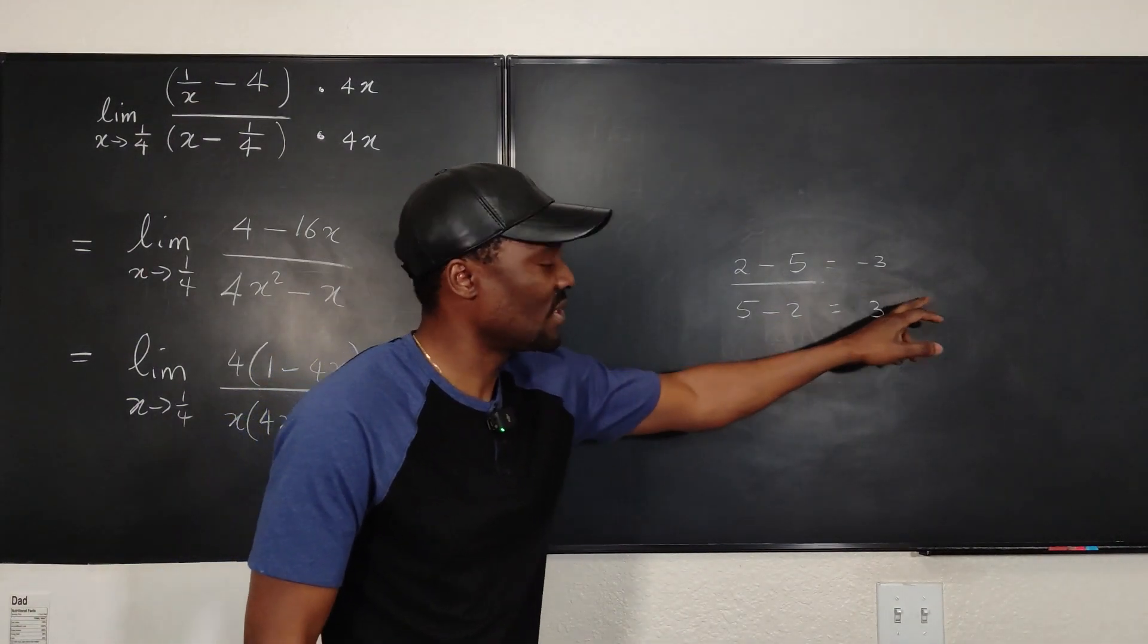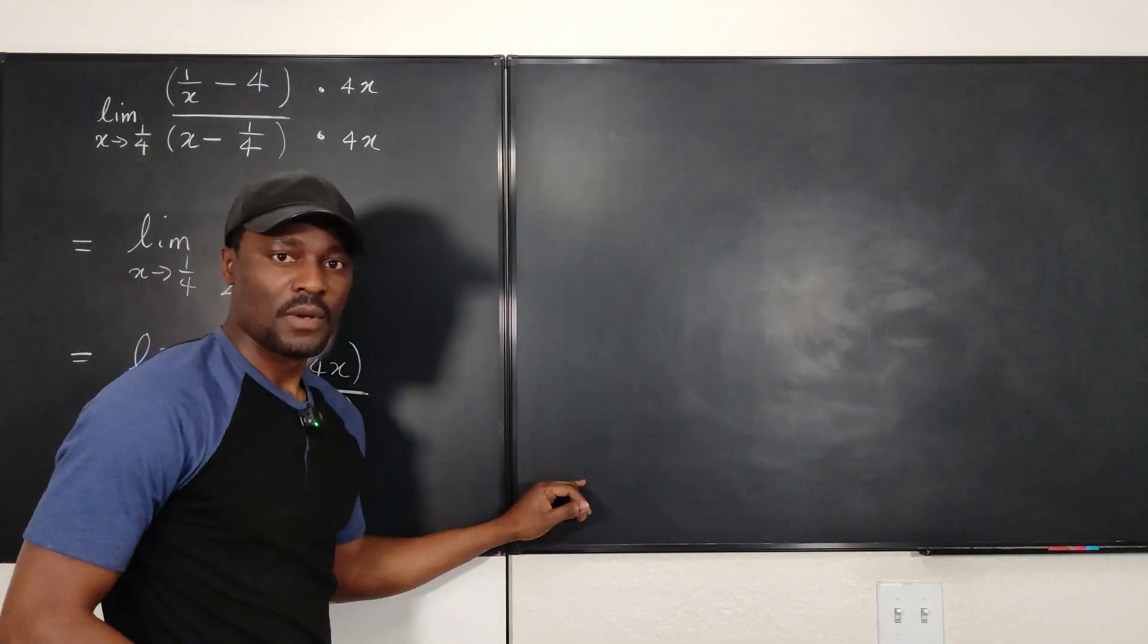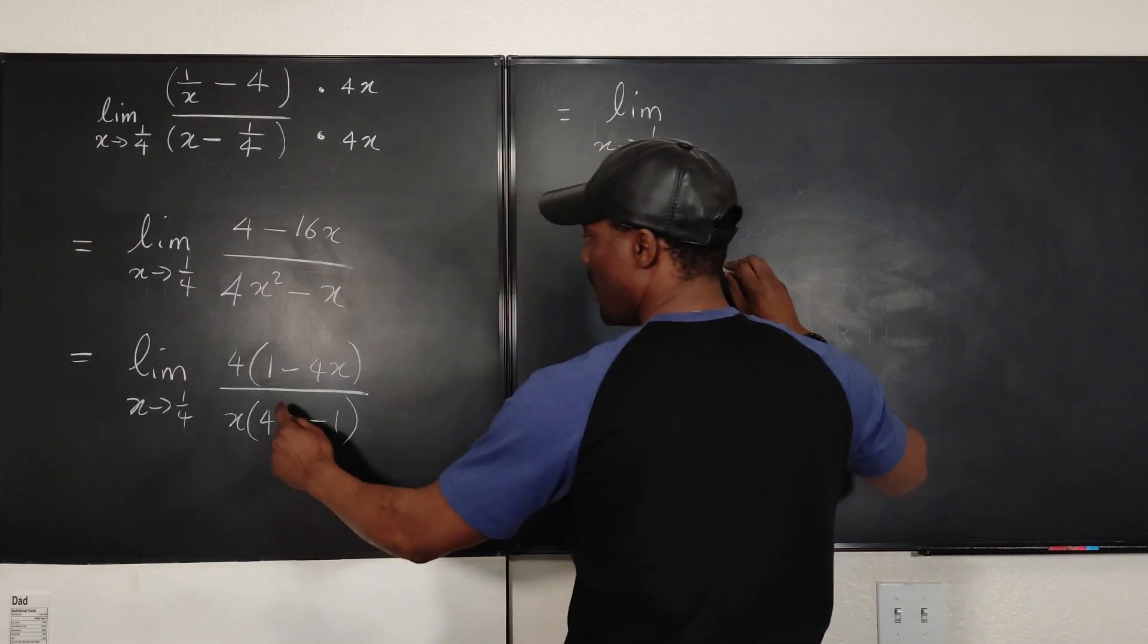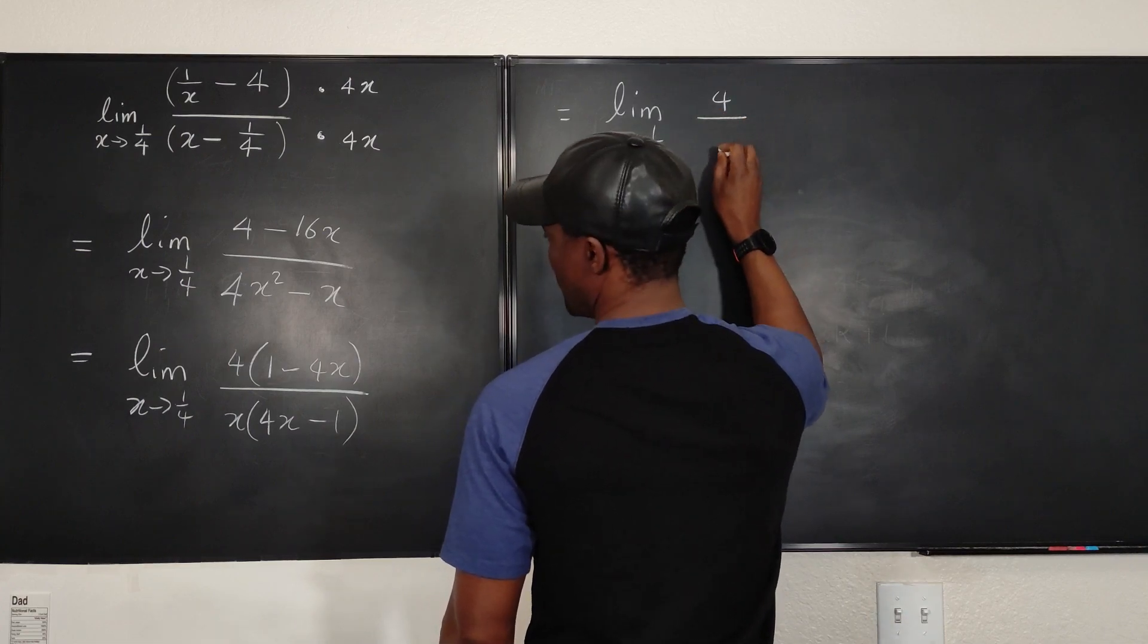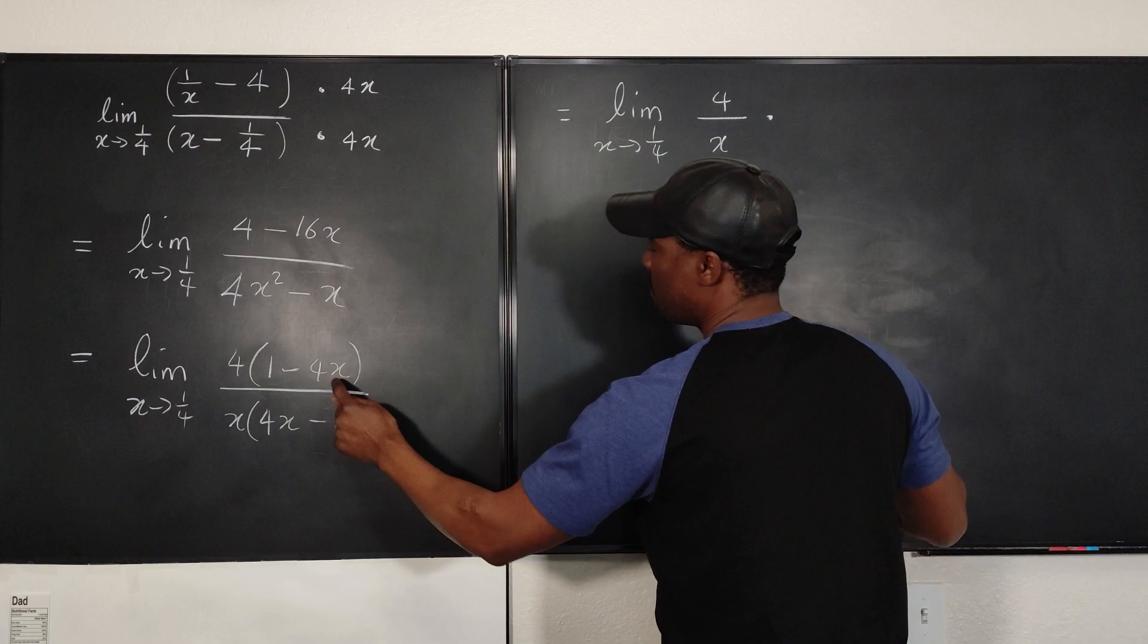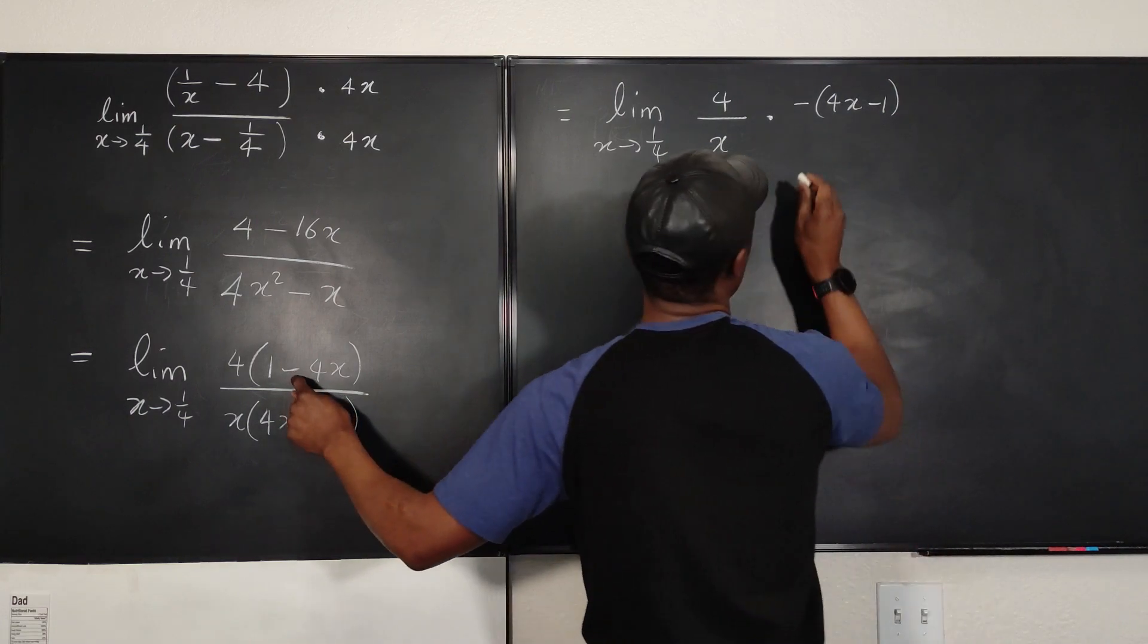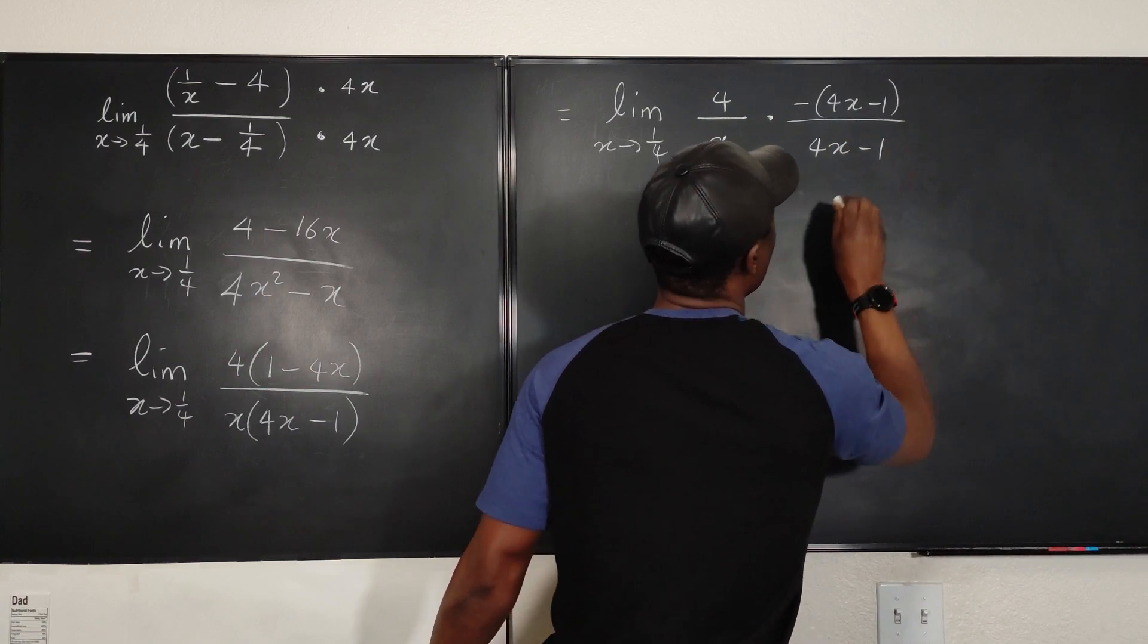So this divided by this is just negative 1. So we know that this ratio is going to be a negative. What we have now is basically the limit as X goes to 1/4 of 4/X multiplied by... So instead of writing 1 minus 4X, I'm going to write the negative version, which is 4X minus 1, which is the same thing as 1 minus 4X, okay, divided by 4X minus 1.